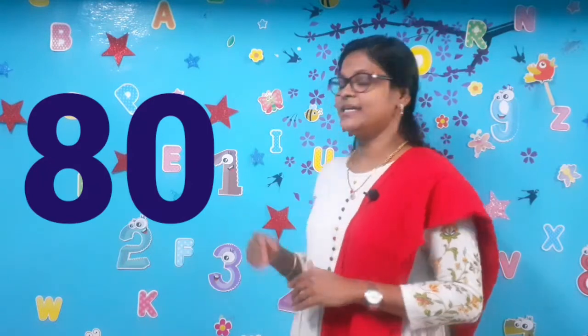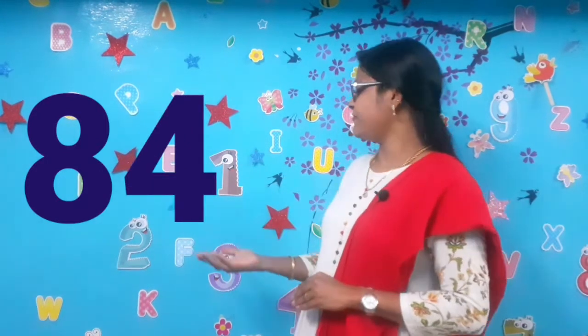Eighty, eighty-one, eighty-two, eighty-three, eighty-four, eighty-five, eighty-six, eighty-seven, eighty-eight, eighty-nine, ninety, ninety-one, ninety-two, ninety-three, ninety-four, ninety-five, ninety-six, ninety-seven, ninety-eight, ninety-nine, one hundred. Very good children, very good! I hope you have identified and listened to the numbers carefully.